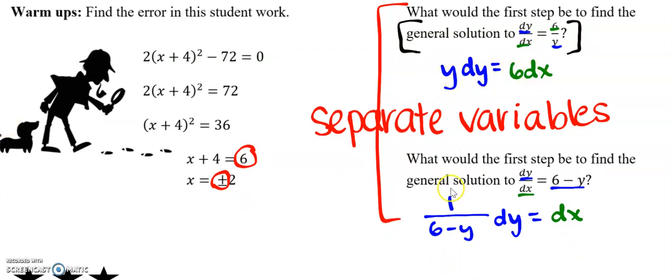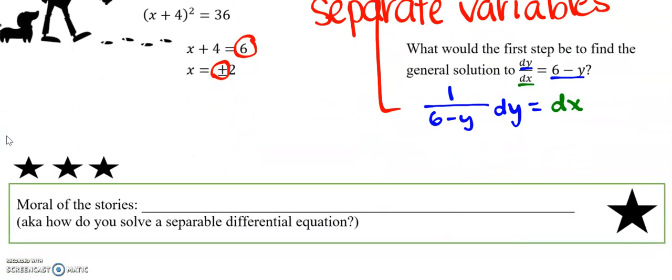We are going to be working with separable differential equations, which means that we can separate our x's together and our y's together and then do the calculus necessary to get to our function. So y dy and 6 dx, 1 over 6 y dy and dx. This one, you would need a u sub right here. And then we'd have something with logarithms. So the moral of the story is step one, separate variables.